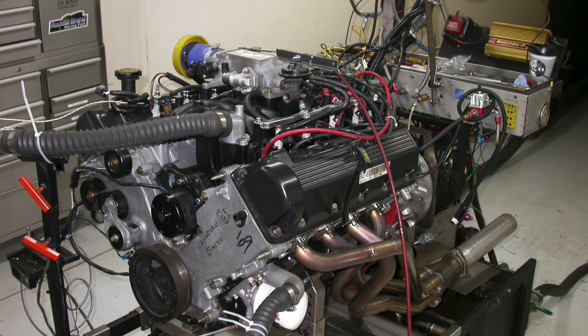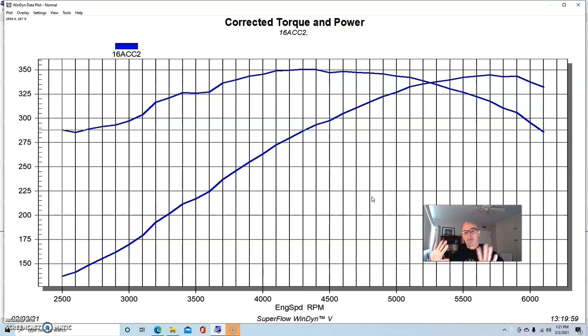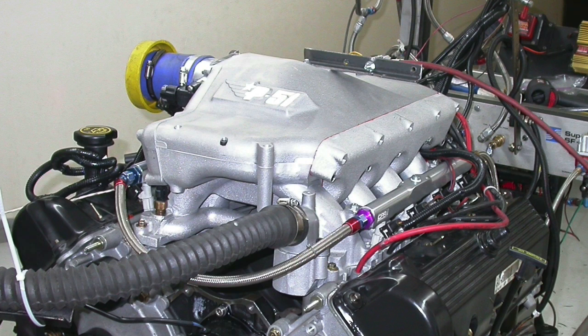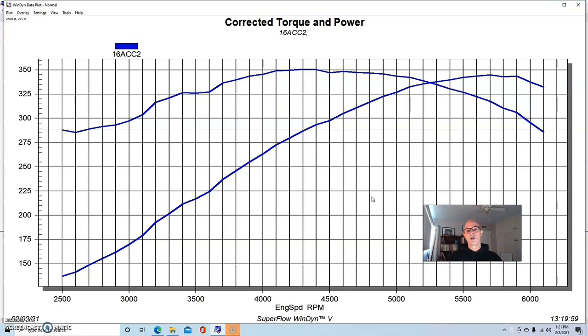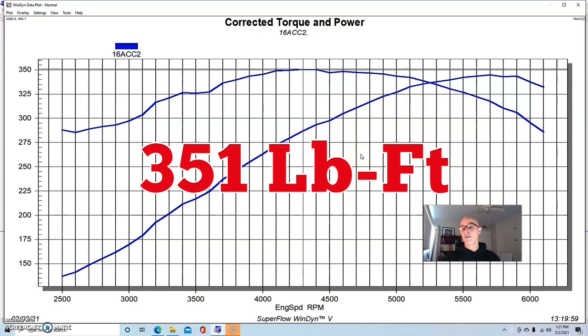Our test combination was a 4.6 liter two valve that came from Sean Highland. It had stock heads on it with a 262 camshaft, the Extreme Energy 262H. This one was slightly lower compression than stock. It did have forged internals in it, although it didn't need it for the test we were doing. The PI intake manifold was fitted with an AccuFab elbow and AccuFab throttle body. We had long tube headers.